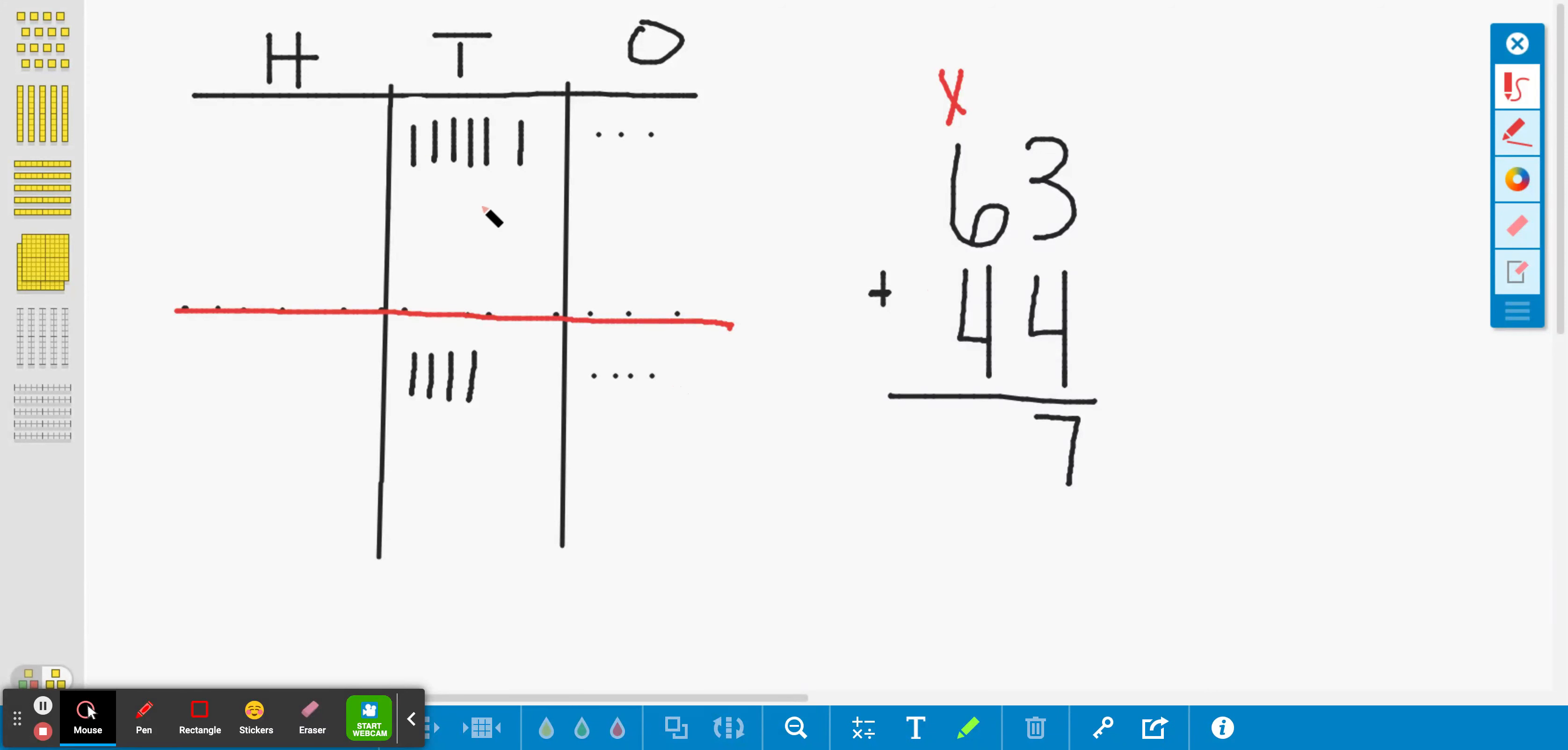Well, now I'm going to add my tens. So count with me while I do this. And we're going to count by tens first. So here we go. Ready? Ten, twenty, thirty, forty, fifty, sixty. Now I need to add these.